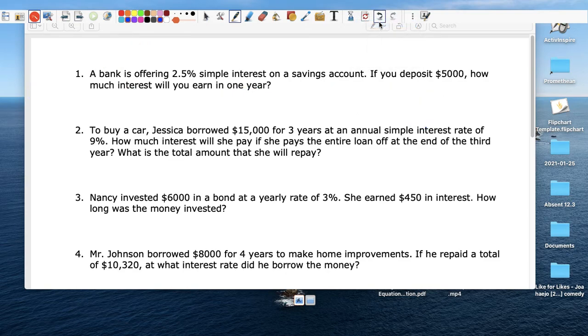To buy a car, Jessica borrowed $15,000. So here's my principal. For three years, here's my time. Remember, it's I equals P multiplied by R multiplied by T. So that's P. That's T. The interest rate R is here. That's R.